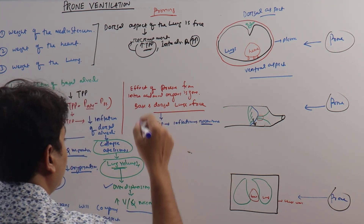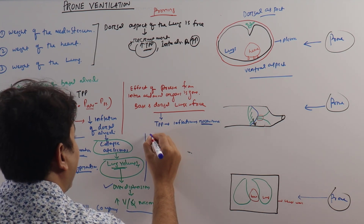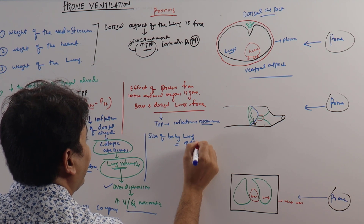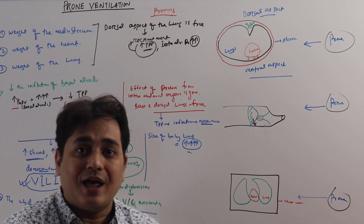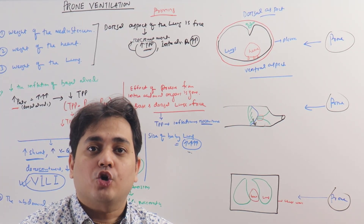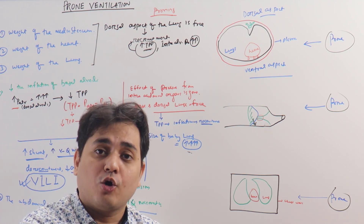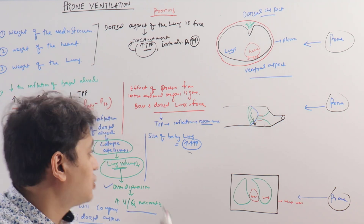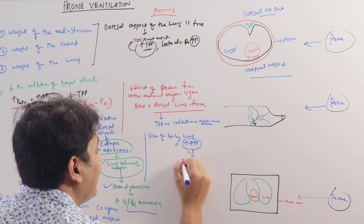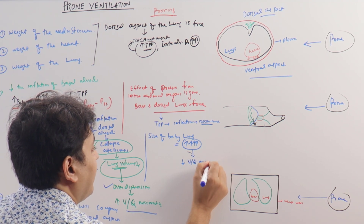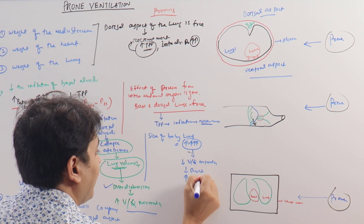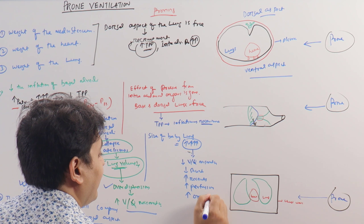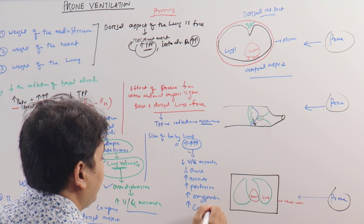Because of this recruitment phenomenon, the size of the baby lung — which was small previously — now increases. The de-recruited, collapsed lung is now open and actively participating in oxygenation and ventilation. Before proning, only a small portion of lung was participating; after proning, the dorsal aspects and bases also come into action, increasing baby lung size, which in turn decreases VQ mismatch.